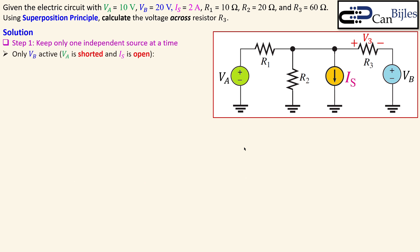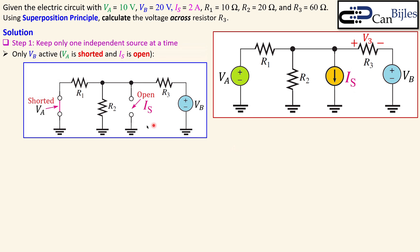Now let's activate Vb only — that is the second step. Va is now shorted and the current source Is is open. The circuit becomes: an open DC current source, Va shorted, and Vb still active. We see R3 in series with Vb, but now R1 and R2 are in parallel. Again we need to calculate the partial effect of V3 due to Vb.